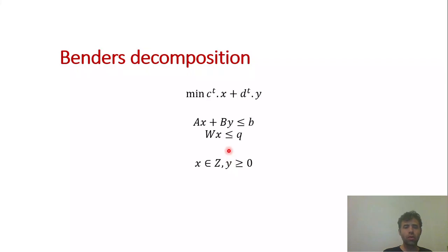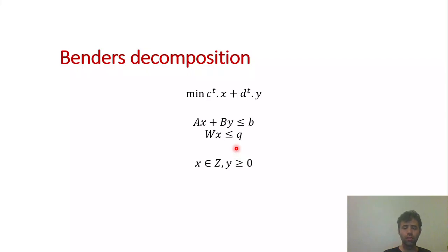This problem is complex because if the integer variables didn't exist, we would simply perform the simplex algorithm and find the solution easily. And if the y variable didn't exist, we would perform the cutting plane algorithm to solve it. But now the variables are mixed together — integer variables and real variables.